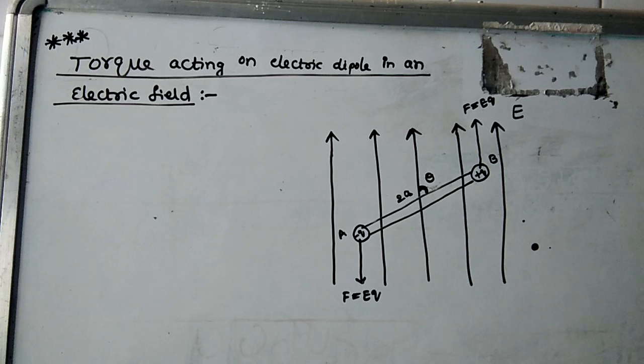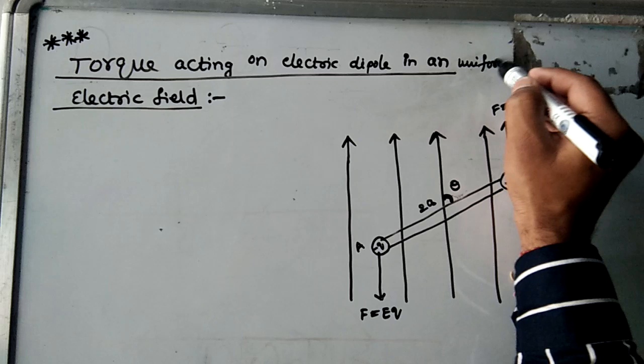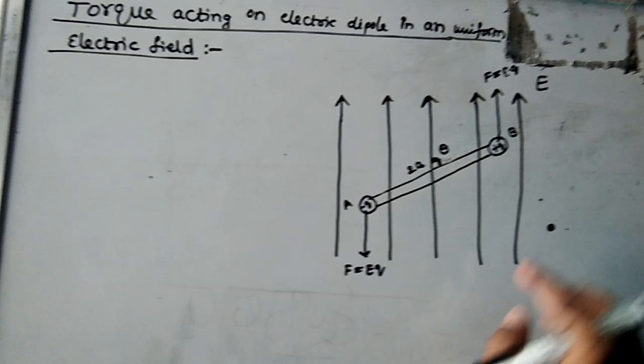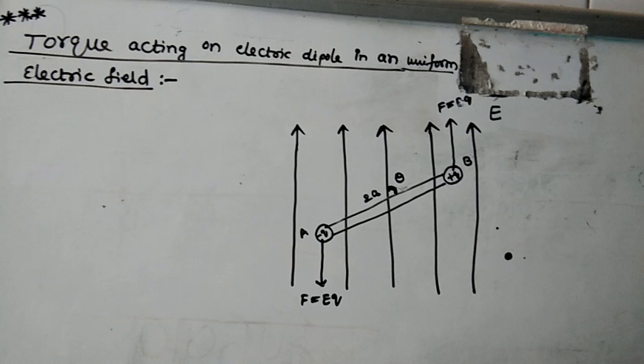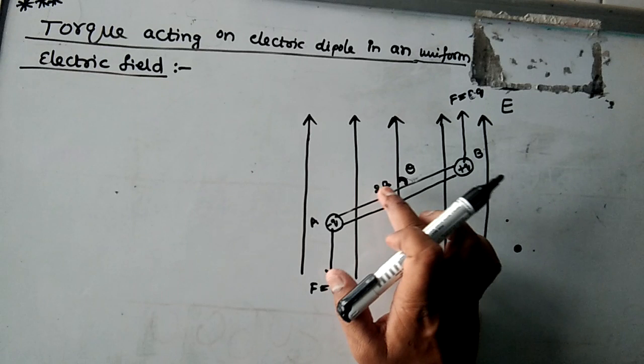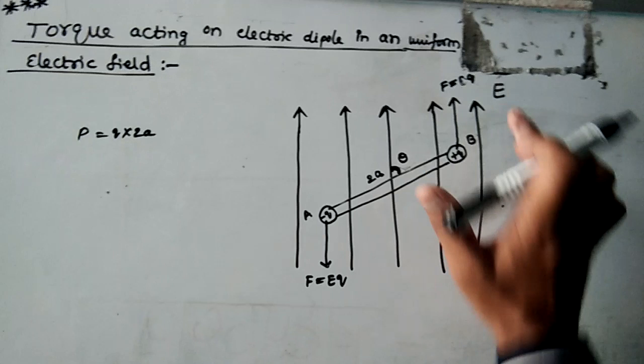Welcome to the next very important concept: torque acting on an electric dipole when kept in a uniform electric field. Consider a uniform electric field represented by equidistant parallel lines of intensity E. I kept an electric dipole AB with charges minus Q and plus Q, with length 2A, so dipole moment P equals Q into 2A, making some angle theta with the electric field.